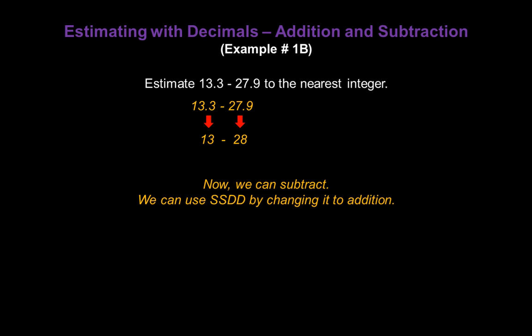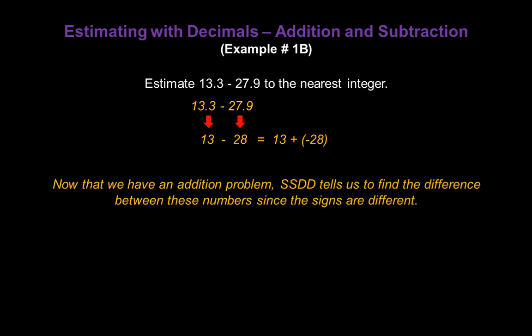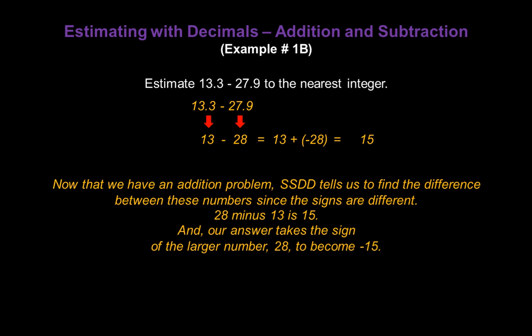I'm going to use SSDD by changing this into an addition problem to make it easier to do. Now if you're not familiar with how to change subtraction to addition and you've never heard of my SSDD method before, you may want to view my lesson on subtracting integers. It will make this problem easier. 13 minus 28 becomes 13 plus a negative 28 as an addition problem. Now that we have an addition problem, SSDD tells us to find the difference between these numbers since the signs on the 13 and the 28 are different. 28 minus 13 is 15. So we'll write down 15 as part of our answer. Now we have to figure out what sign it is. Our answer takes the sign of the larger number. 28 is larger than 13 and the 28 is negative. So our answer will be negative 15. And the actual answer is negative 14.6. So once again, our estimate is very good.